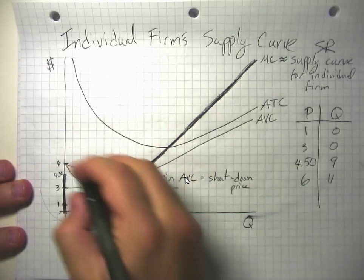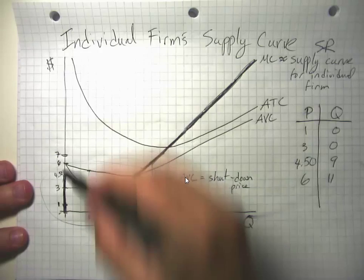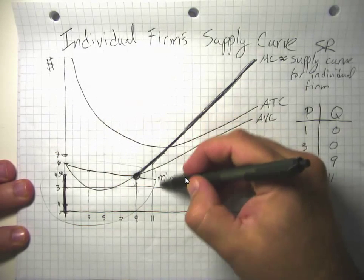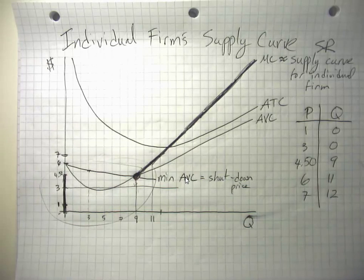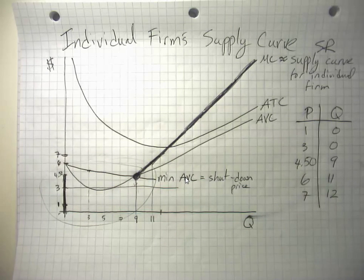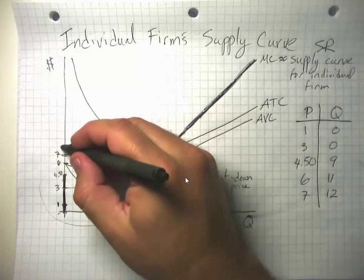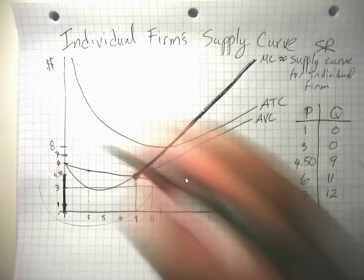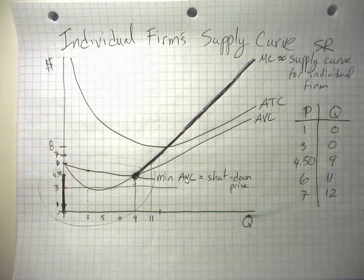Notice that if this firm gets a price of 7, it would be willing to supply 12 units in the short-run. But in the long-run, a price of 7 isn't allowing it to break even. This firm needs a price of $8 to break even because that's the lowest point of the average total cost curve.